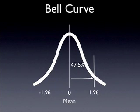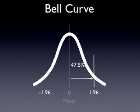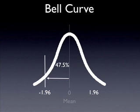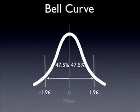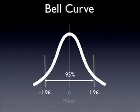A common z-score is 1.96. That means 47.5% of observations will fall between zero and 1.96 standard deviations away from the mean. Again, it's symmetrical — 47.5% from zero to negative 1.96 — which gives us 47.5% on both sides, for a 95% chance that any observation will be between negative 1.96 and positive 1.96.